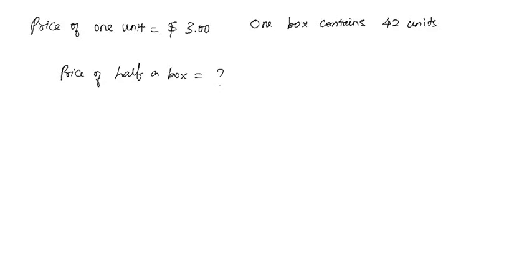If one box contains 42 units, half of a box will contain 21 units. The price of one unit is $3, so the price of 21 units will be 21 times 3, which is $63. So the price of half of a box is $63.